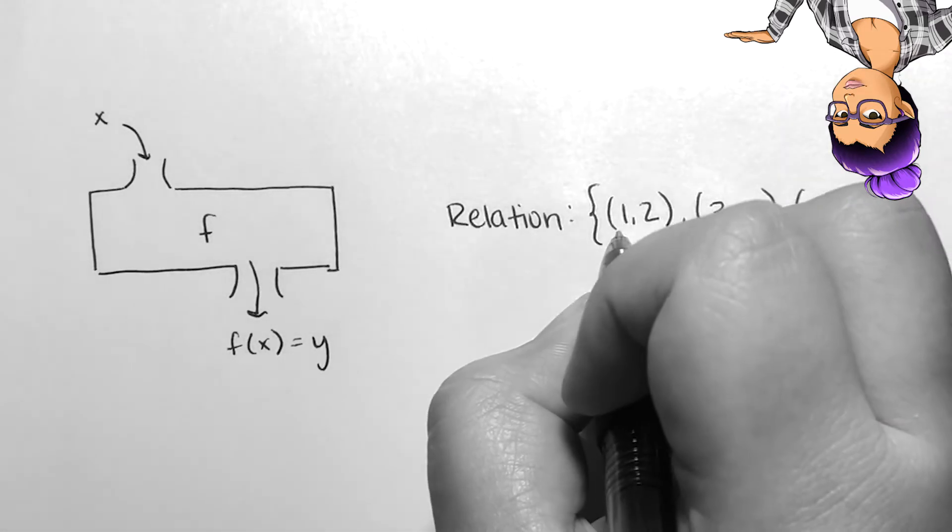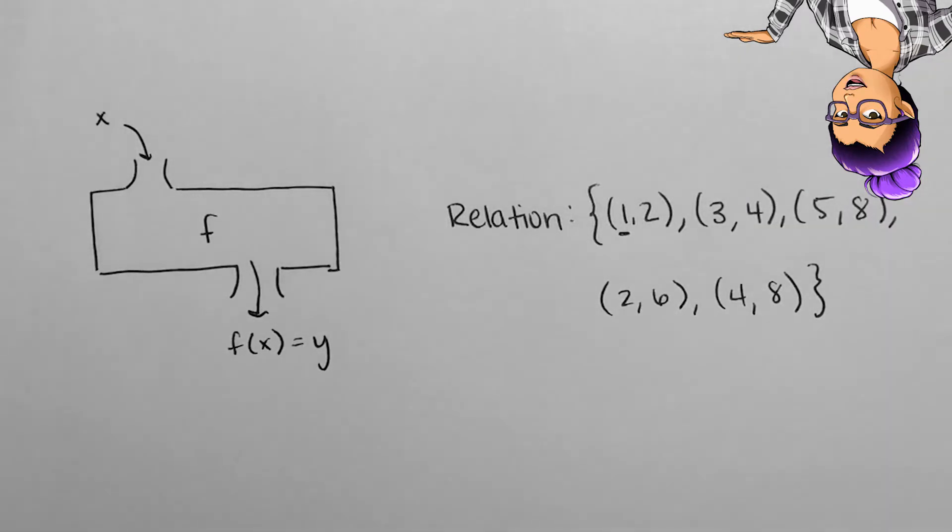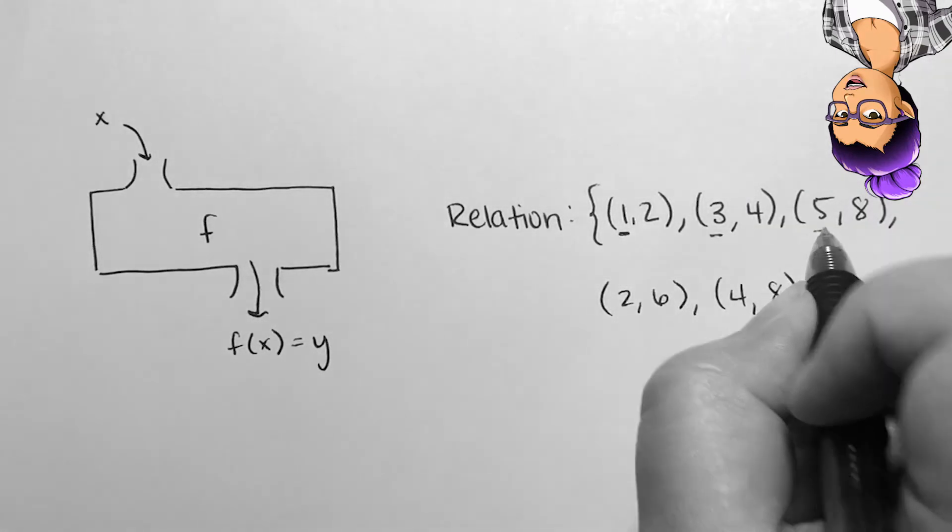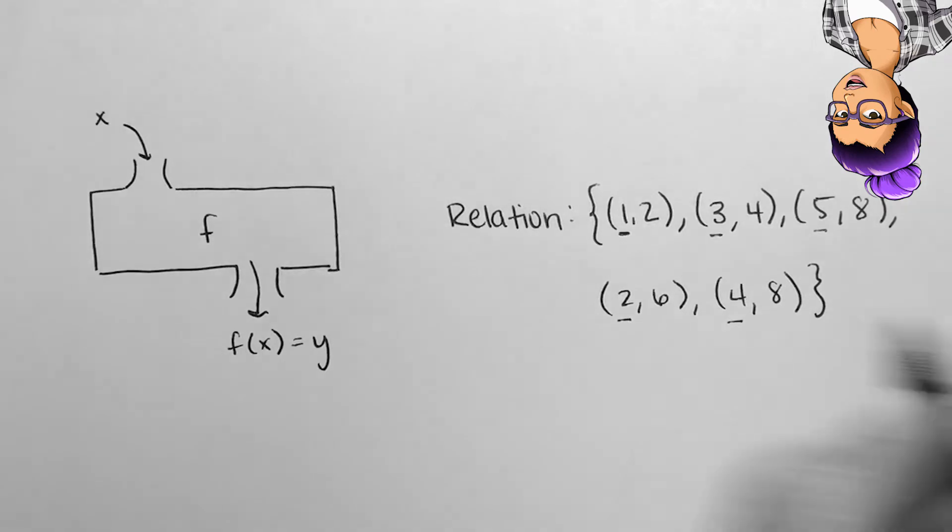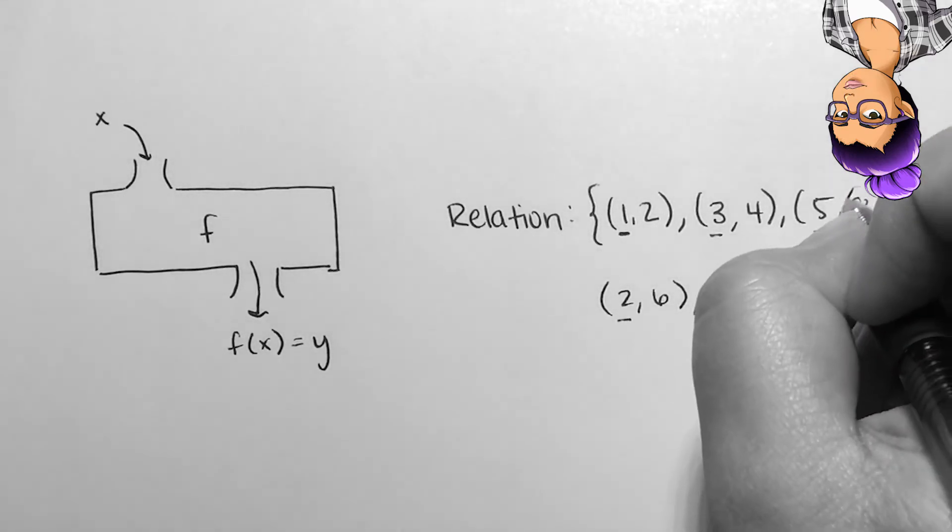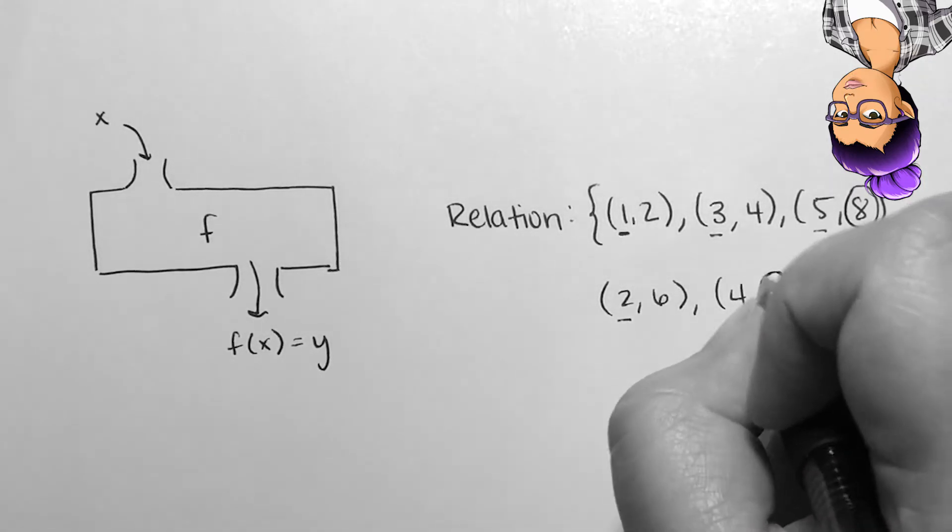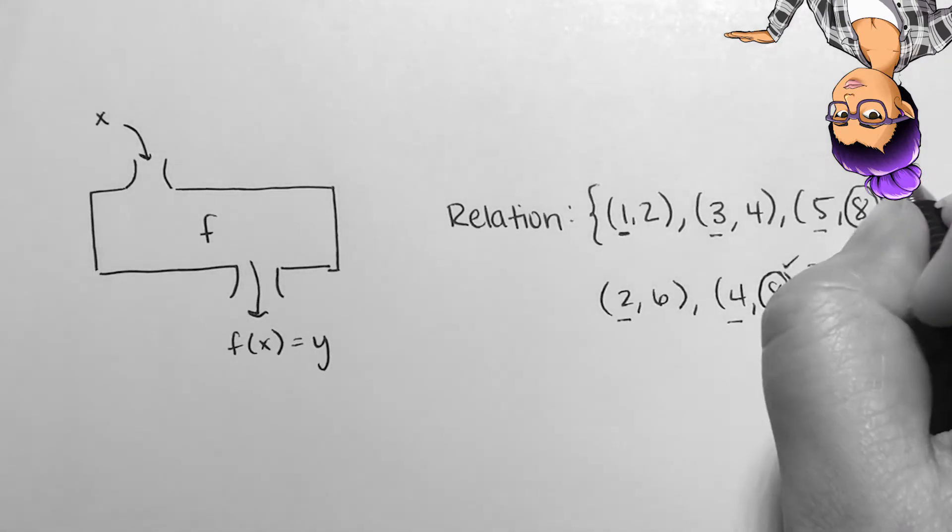The ingredient 1 creates the product 2 and it does not create any other items. The same can be said of 3, 5, 2, and 4. 8 is created by both 5 and 4, but this is okay and does not go against our function definition.